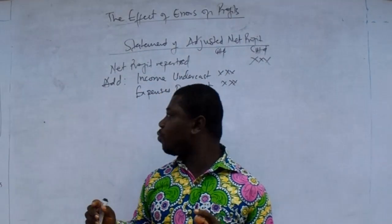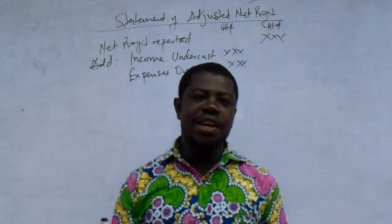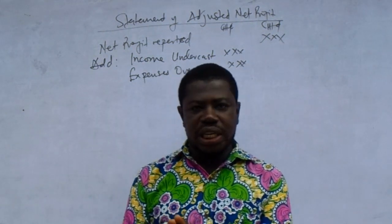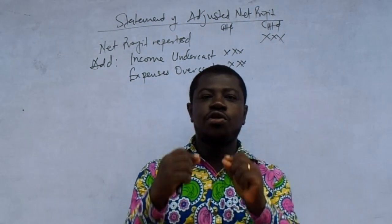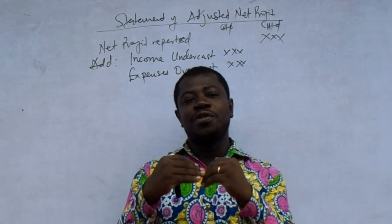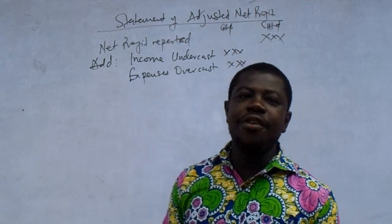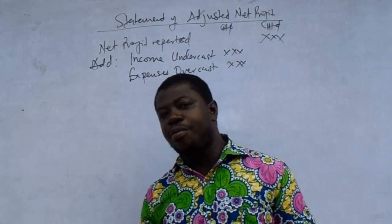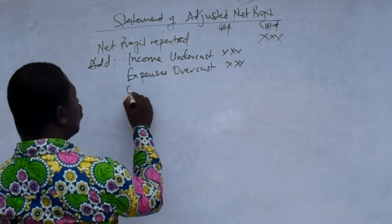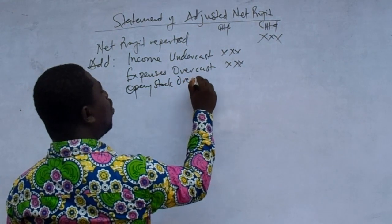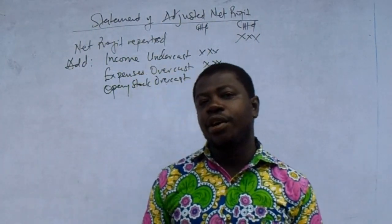Now let's look at stocks, or inventory. We have two types of stocks on the income statement: opening inventory and closing inventory. If opening stock is overstated, cost of goods available for sale will be overstated, meaning cost of sales will be overstated. If cost of sales is overstated, profit will be understated. Since profit is understated, that difference must be added back — so opening stock overcast will be added back to profit. The opposite is also true: opening stock undercast will be deducted.